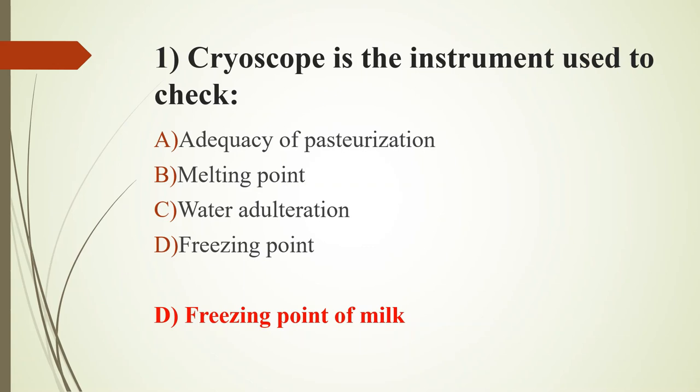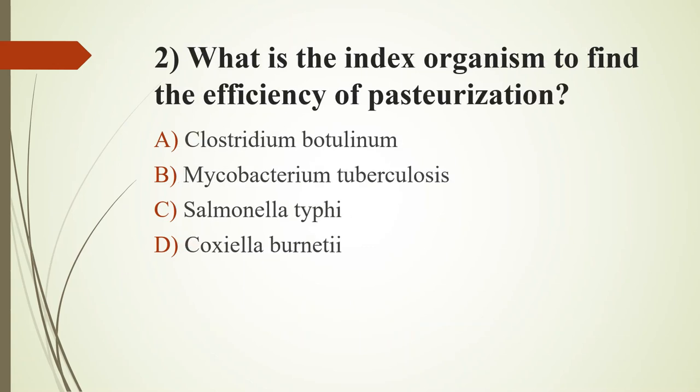Second question: what is the index organism to find the efficiency of pasteurization? Option A, Clostridium botulinum; option B, Mycobacterium tuberculosis; option C, Salmonella typhi; option D, Coxiella burnetti. The answer is option D, Coxiella burnetti.